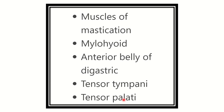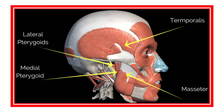So the muscles supplied by the trigeminal nerve are: the muscles of mastication, mylohyoid, anterior belly of digastric, tensor tympani, and tensor palatine. Here we can see the muscles of mastication — this is the temporalis muscle, this is the masseter muscle, here is the medial pterygoid, and behind it is the lateral pterygoid. These four muscles — masseter, temporalis, medial pterygoid, and lateral pterygoid — are supplied by the trigeminal nerve.